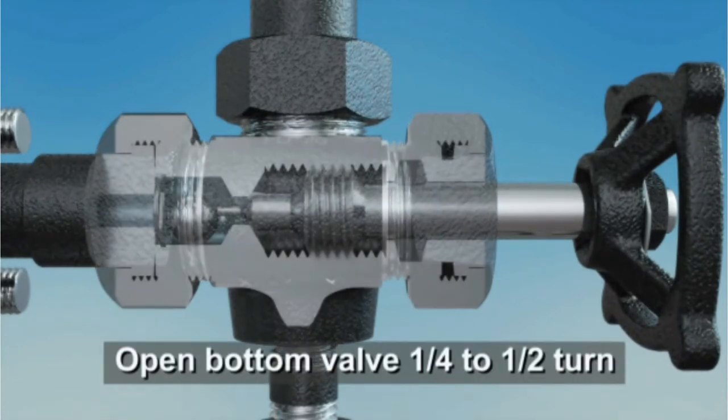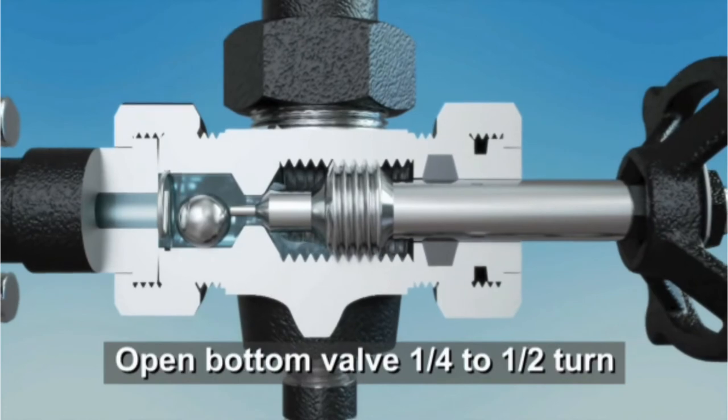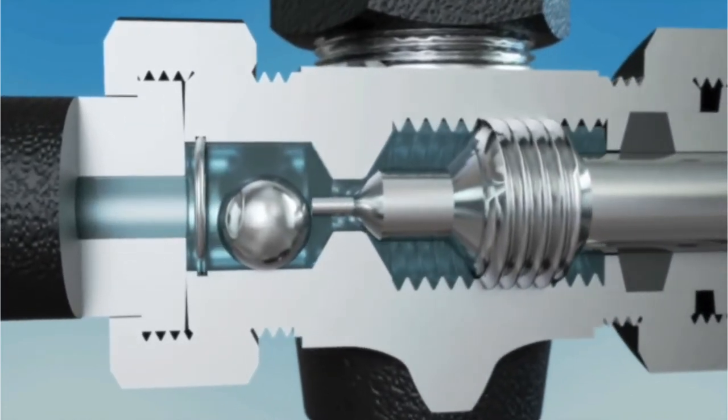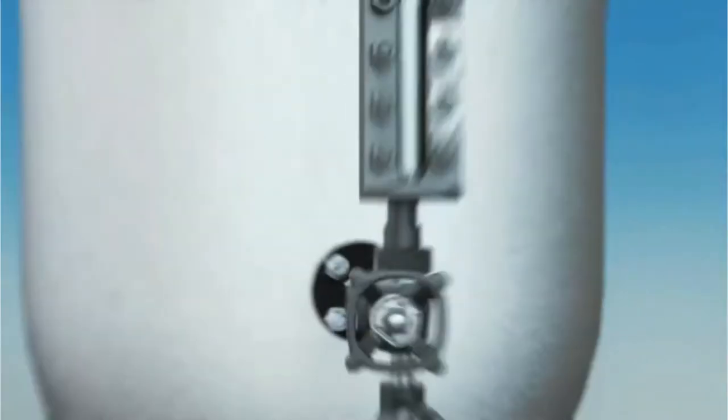Next, open the bottom valve one-quarter to one-half turn to allow liquid to flow into the gauge. Notice how only slightly opening the valve keeps the stem tip in contact with the ball check. The importance of this will be explained shortly.